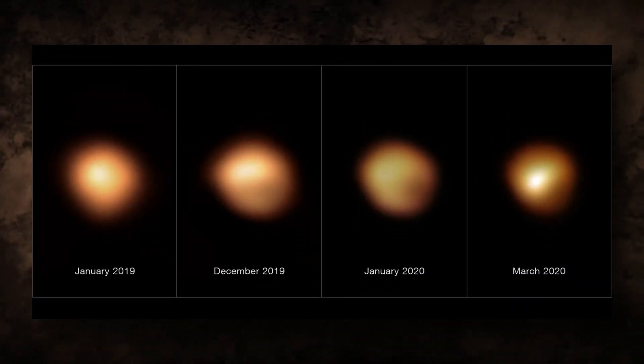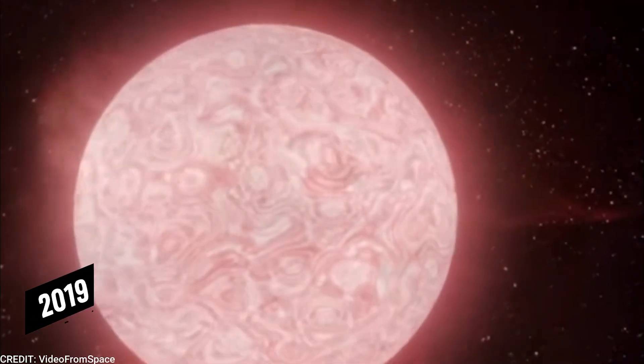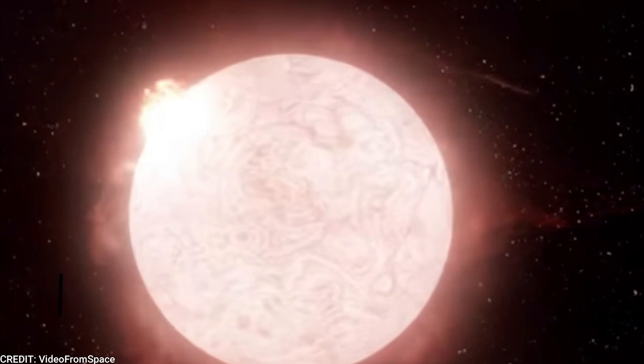Betelgeuse has been increasing darker and brighter in recent years. In 2019, the star's brightness was reduced to around one-third of what it had been previously.